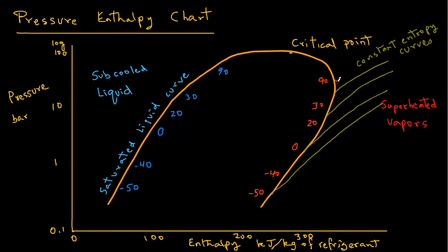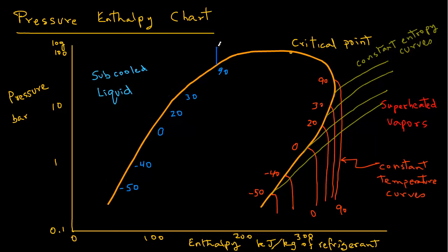From the temperature 90 we will drop a curve down. Any point on that curve represents a temperature of 90 degrees. Similarly we will drop temperature lines from 30, 20, 0, minus 40 and minus 50. These are the constant temperature curves and they are in the superheated vapor region.